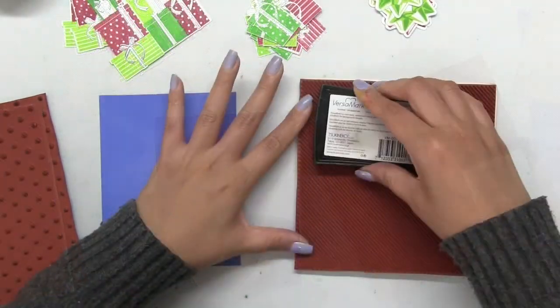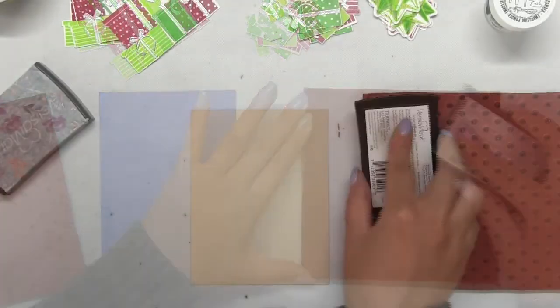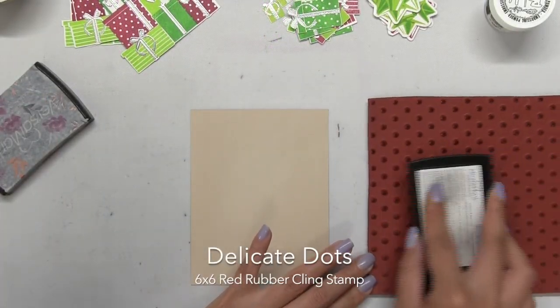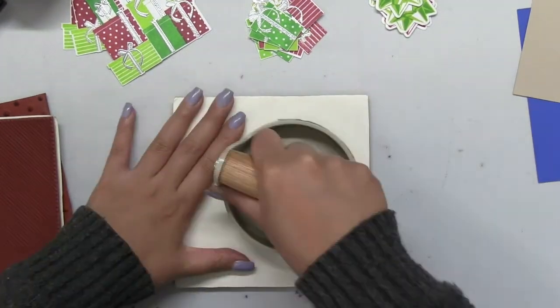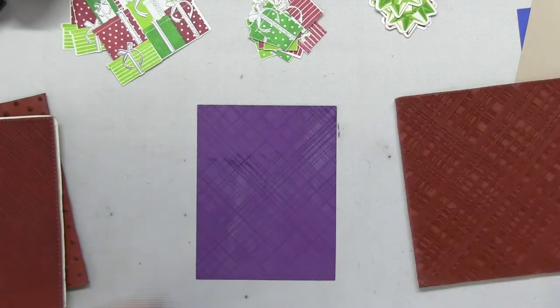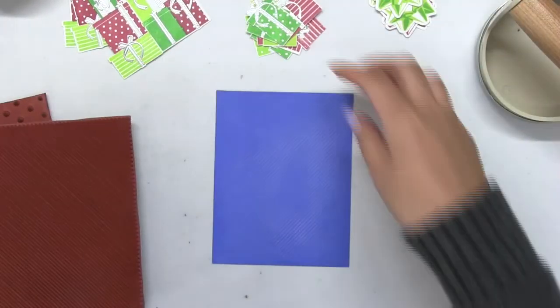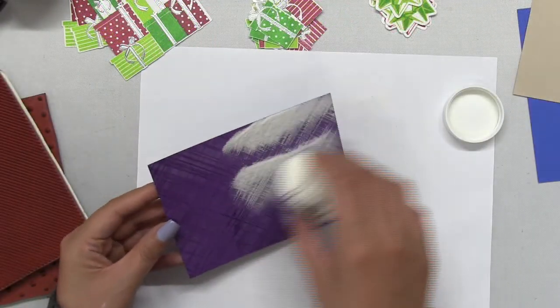I'll be using our modern plaid, diagonal stripes, and delicate dots background stamps. I inked up each background stamp with some embossing ink, placed it over the three A2 panels, and stamped the prints onto the background panels. I also used my Baron tool to help get a nice crisp impression.